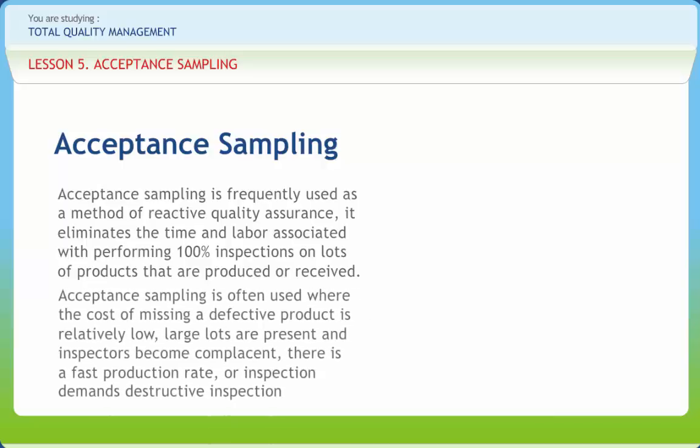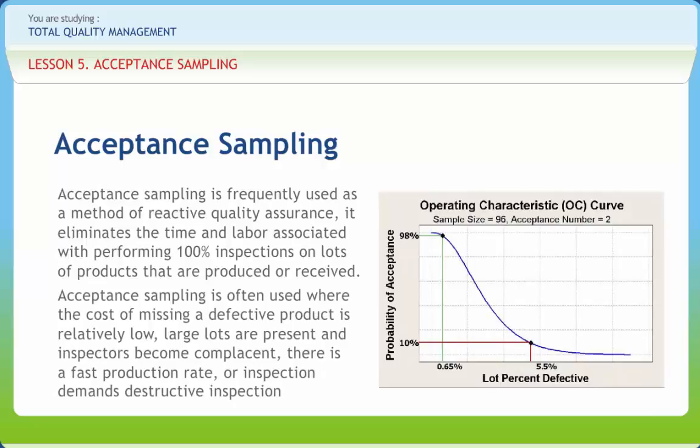Acceptance Sampling is often used where the cost of missing a defective product is relatively low, large lots are present, and inspectors become complacent. There is a fast production rate, or inspection demands destructive inspection. Acceptance Sampling is a quality assurance technique used for inspecting incoming material and outgoing or finished products.